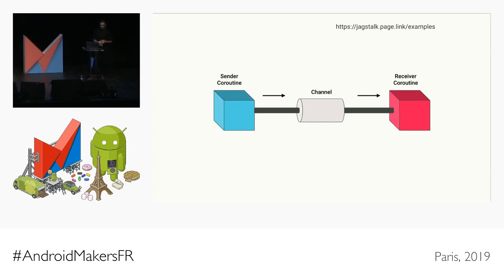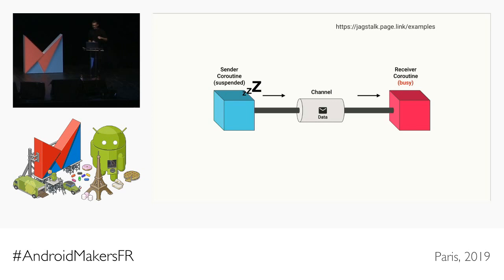A channel has three components: a sender, a receiver, and an optional buffer. If I'm the sender and I send a message but the receiver isn't there or is busy, as I place that message onto the channel I'm suspended — I can't do any more work and I have to wait until the receiver grabs that message. The moment the receiver grabs it is the moment of synchronization — I know it received the message, I can let go and start doing my work, and the receiver can start performing operations on it.